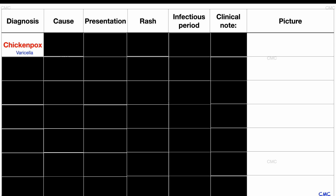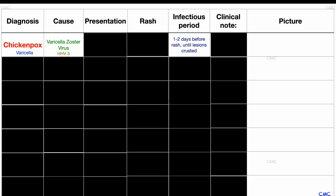Let's start with one of the most common childhood rashes, the super itchy and therefore annoying chickenpox, also known as varicella because it's caused by the varicella zoster virus, which belongs to the family of human herpes viruses. It is contagious from one to two days before the rash appears, during which the child will have fever, aches, and loss of appetite. The child is still contagious until all the blisters have crusted over, which usually takes around five to seven days.